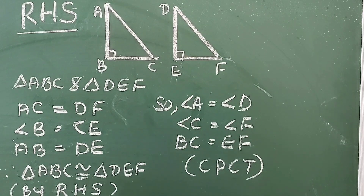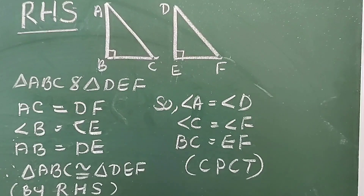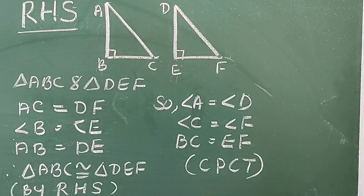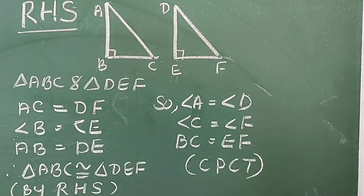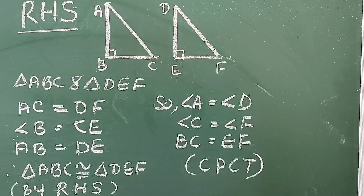RHS congruence: Two right-angled triangles are congruent if one side and the hypotenuse of a triangle are respectively equal to the corresponding side and hypotenuse of the other triangle. This is known as RHS congruence. RHS stands for Right angle, Hypotenuse, Side.